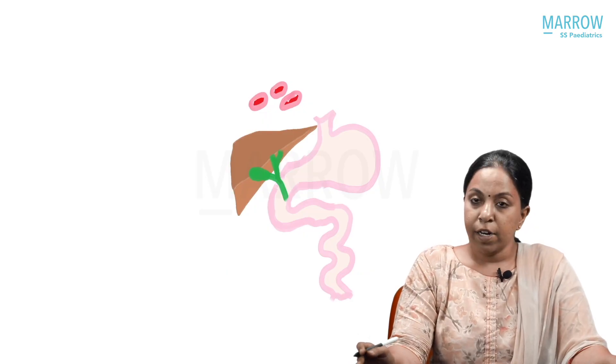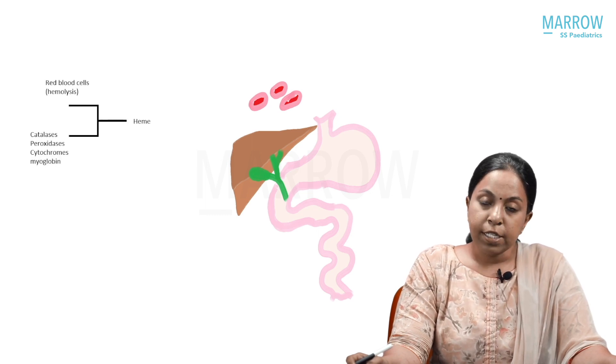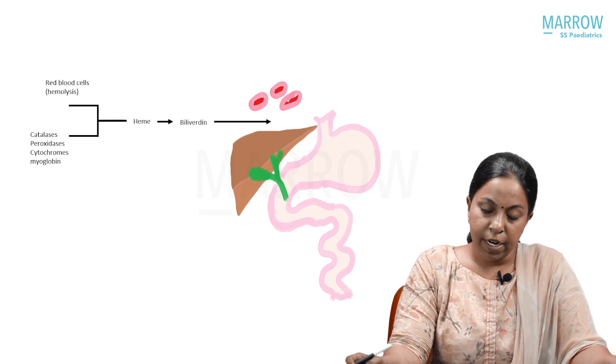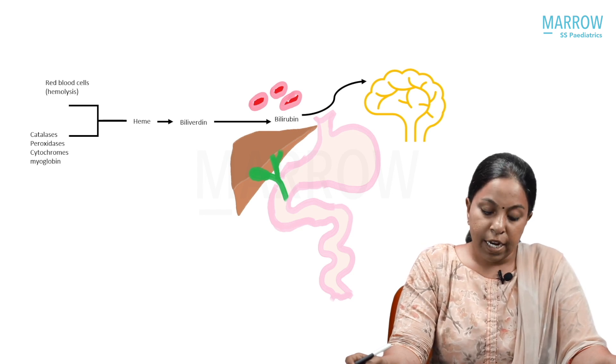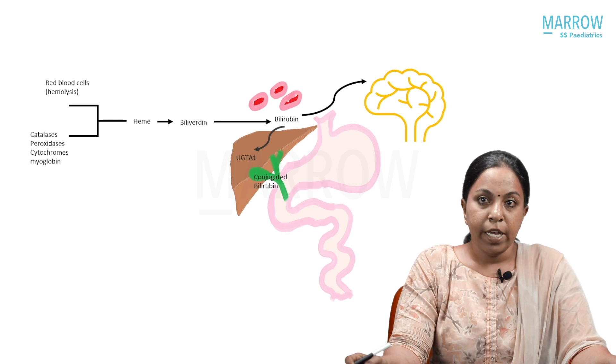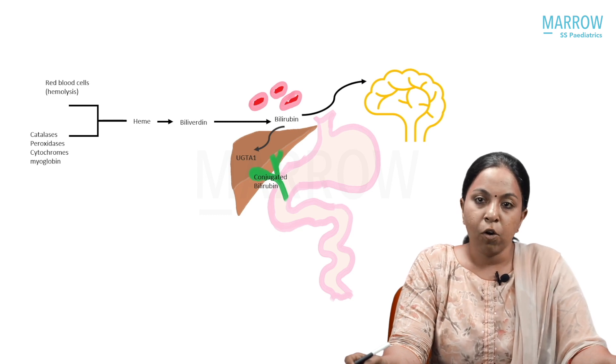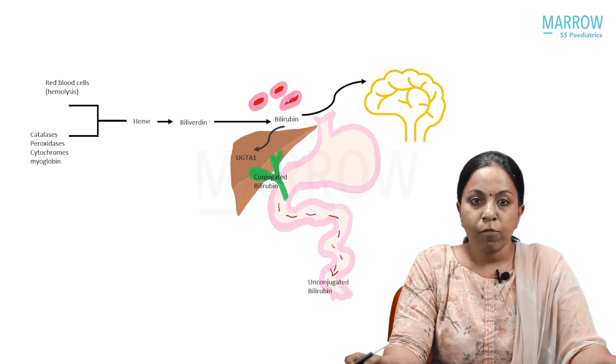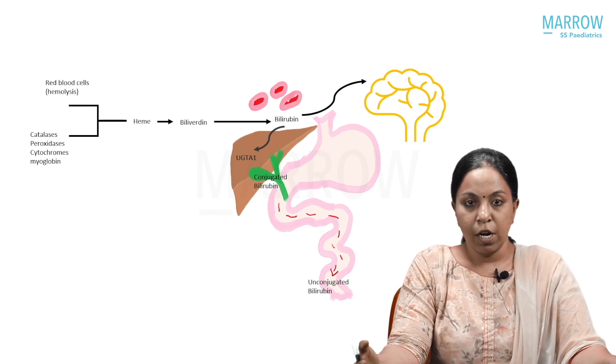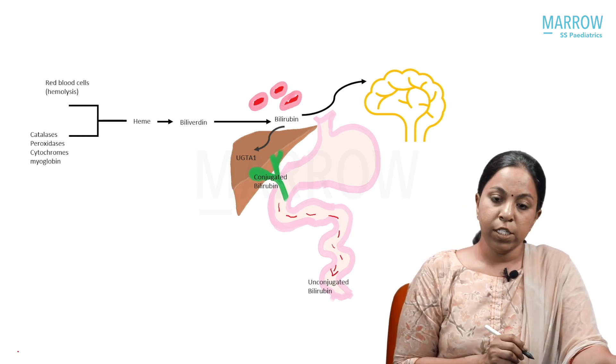You all know that the liver is involved in bilirubin metabolism. RBCs lyse and produce heme. This heme is converted into biliverdin, which is again converted into bilirubin. This bilirubin is unconjugated bilirubin, which is going to affect the brain. This unconjugated bilirubin is taken by the liver and acted upon by the UGT1A1 enzyme, uridyl glucuronyl transferase enzyme, and it is formed into water-soluble conjugated bilirubin. This conjugated bilirubin is excreted into the intestinal lumen, and some amount gets converted back into unconjugated bilirubin and goes into enterohepatic circulation. This is what you as pediatric postgraduates know in detail.